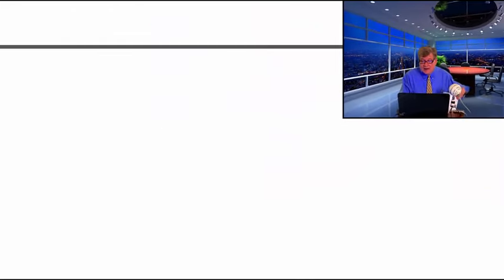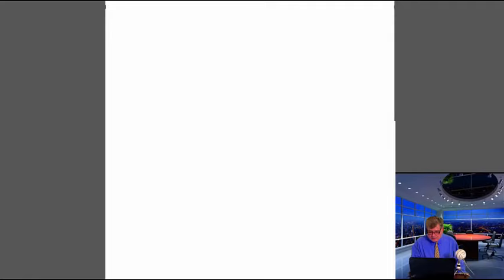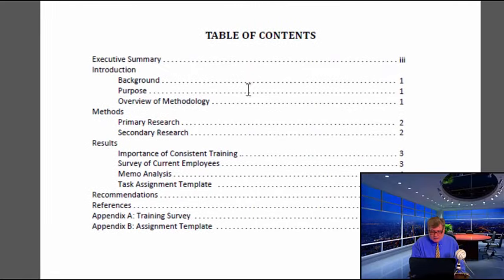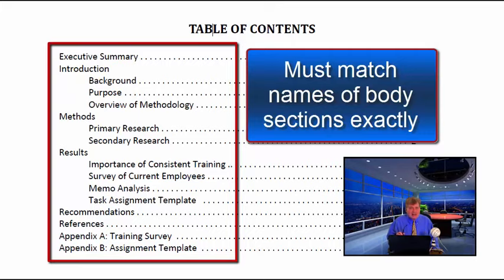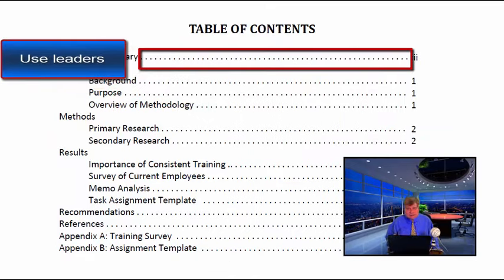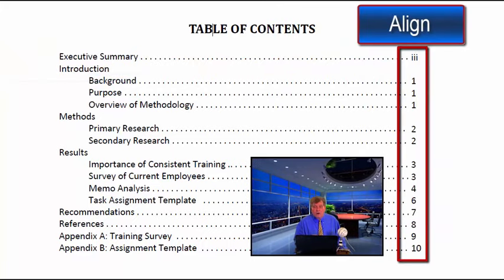The next item in the package is the table of contents. Notice the heading is in all caps. The names of the sections on the table of contents must match exactly the names of the sections in the body of the paper. Also, make sure that you use leaders — those dots that draw your reader's eye from the section name on the left to the page number on the right. Make sure the numbers on the right are aligned.